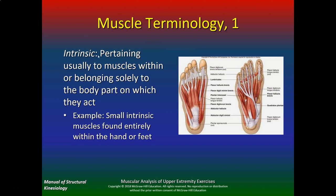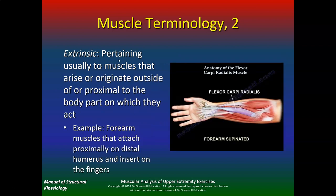Some muscle terminology: intrinsic pertains to muscles within or belonging solely to the body part on which they act — small intrinsic muscles found internally within the hand or feet. Extrinsic pertains to muscles that arise or originate outside of or proximal to the body part in which they act — for example, forearm muscles that attach proximally on the distal humerus and insert on the fingers.